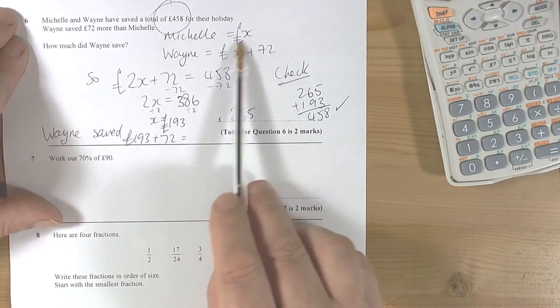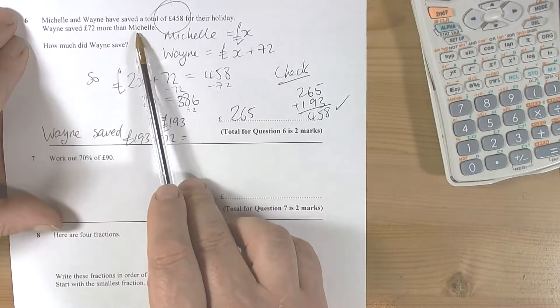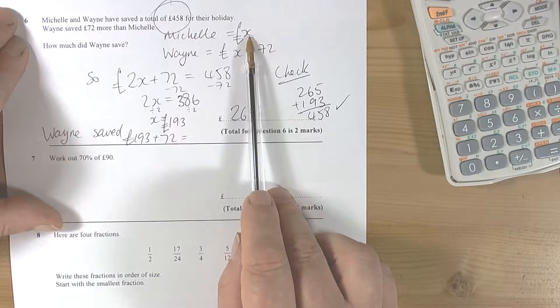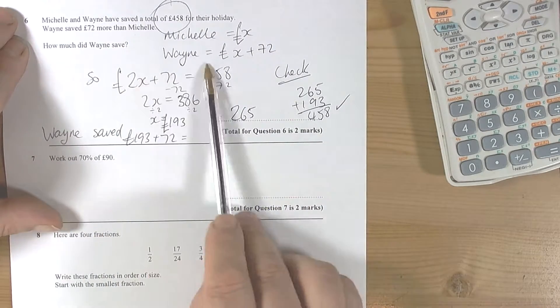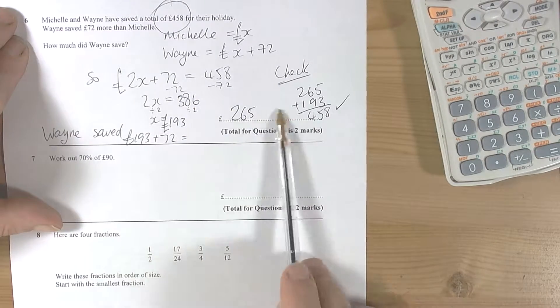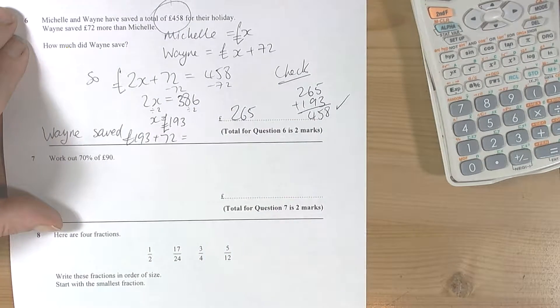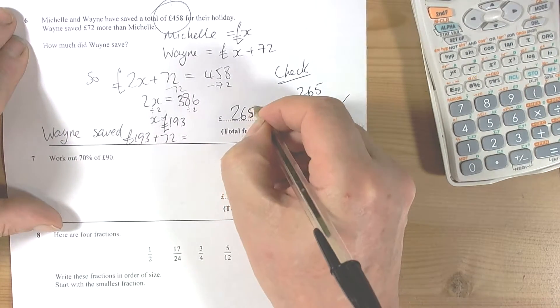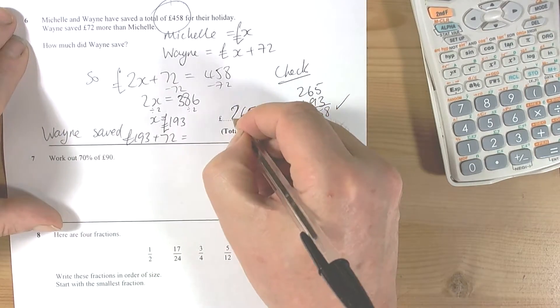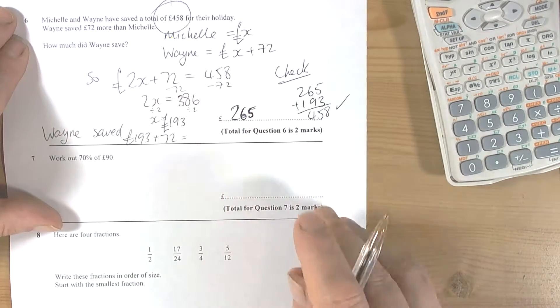Logic says that if we're not sure what somebody does, then call it x, and then write the other thing in terms of x. Then we can write a little equation, solve it, and that will help us to resolve what the actual answer will be. You can do it by trial and error, but just learn a little bit of basic algebra and it will save you a bit of heartache in problems like these.